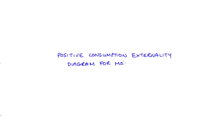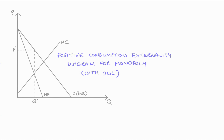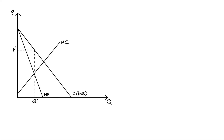Hi everyone. In this video I'm going to go through how to understand our market diagram when we have a monopoly and we also have a positive consumption externality. As part of the discussion I'm going to go through deadweight loss. On the diagram I have here on the screen I just have a standard monopoly outcome, where the monopolist produces q* units and sells each unit for p*.